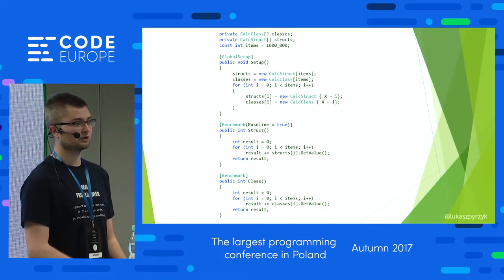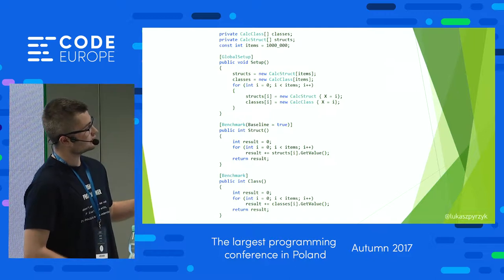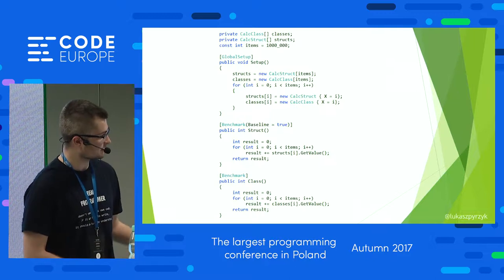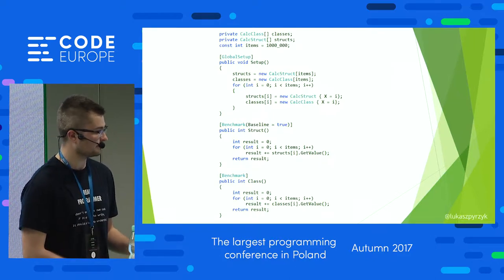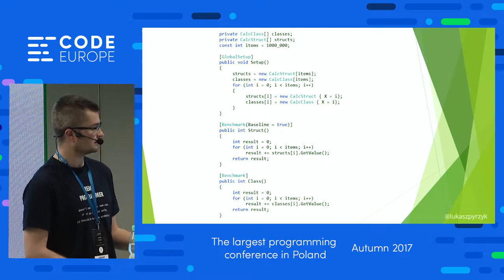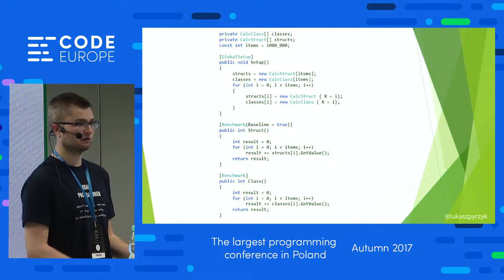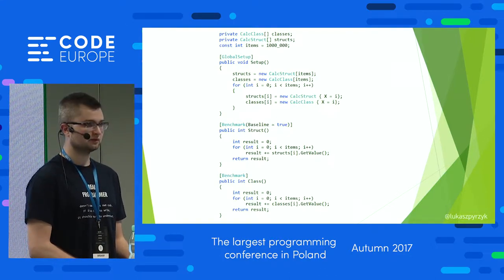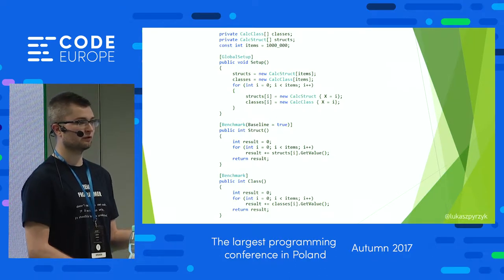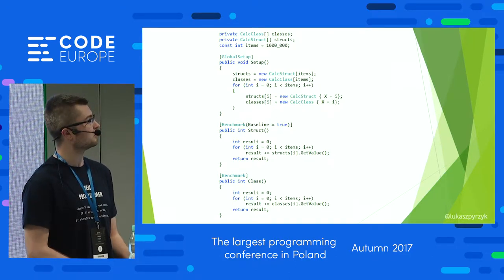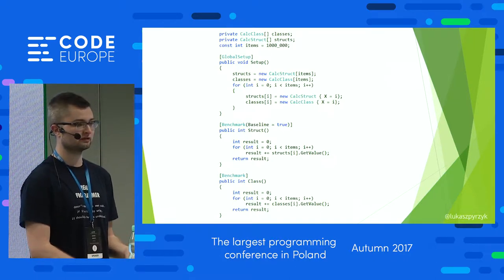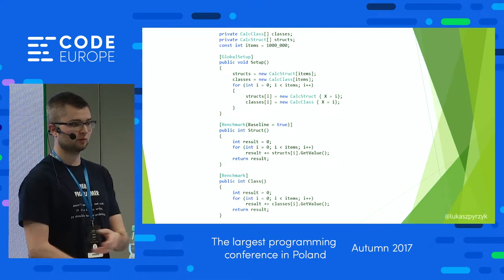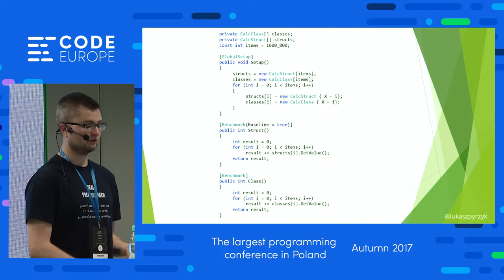I'm using Benchmark.NET — a library for benchmarking code in .NET. The global setup method will prepare data for me. The method called 'struct' will be run first, several times, and Benchmark.NET will try to run this method as long as needed to calculate the correct performance. The 'class' method does exactly the same: I'm walking through all objects inside an array of one million elements, adding the value, and returning it. The benchmark is about processing a huge amount of objects or structures and comparing which is faster.